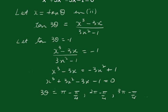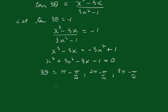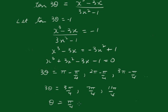Tidying that up: 3θ = 3π/4, then 7π/4, then 11π/4. Dividing through by 3: θ = π/4, 7π/12, and 11π/12.